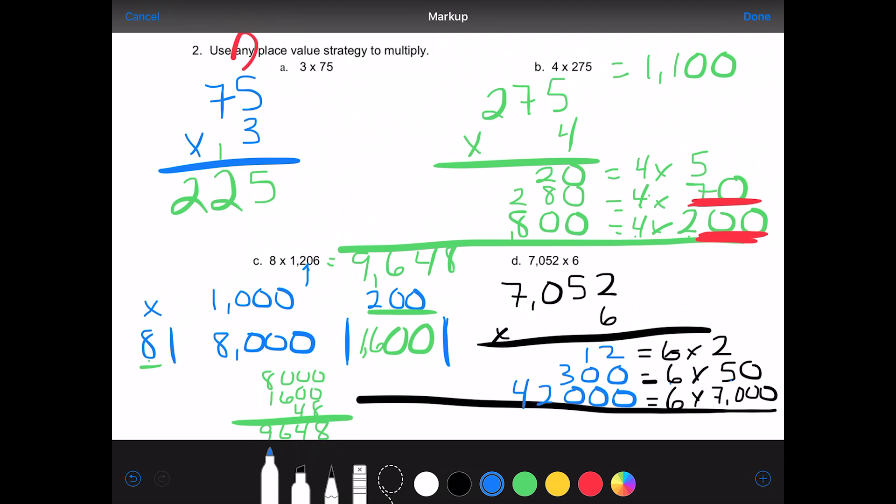And then last we have 6 times 7 is 42, but 6 times 7,000 is 42,000. And so we write it out, 42,000. And now I can add everything together. I have a 2, a 1, a 3, a 2, a 4, which is 42,312. You can write that right up here, 42,312. Make sure you're nice and neat so your teacher can read it. We will go on to the others in the next video. Thanks for watching.